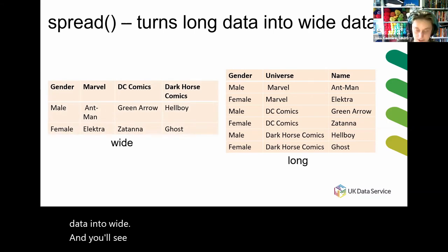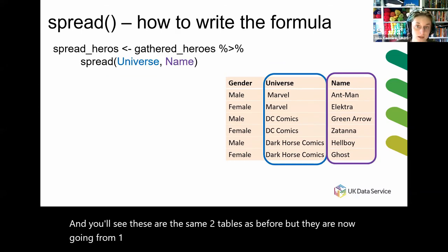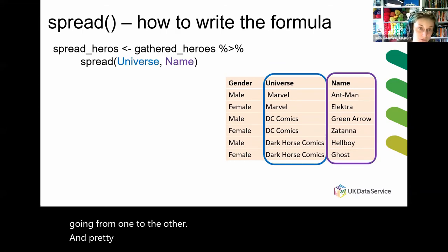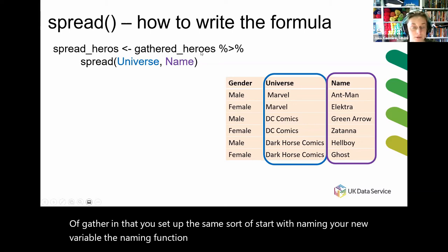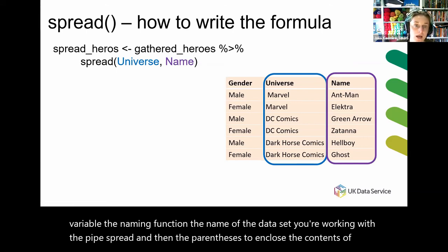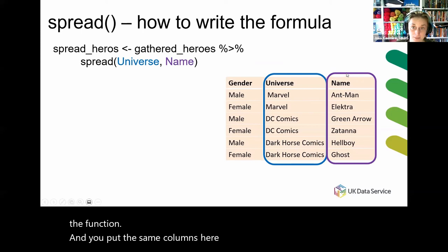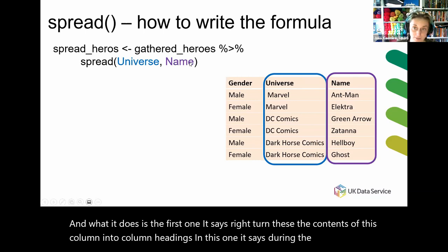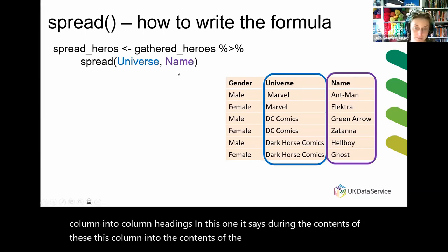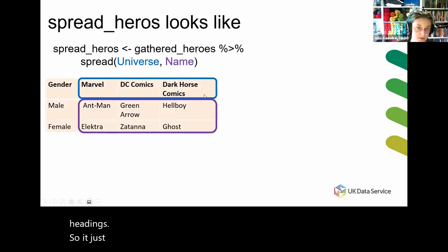You'll see these are the same two tables as before, but now going from one to the other. It's pretty much the reverse of gather — you set up the same sort of start: naming your new variable, the naming function, the name of the data set, the pipe, spread, and then parentheses enclosing the function contents. You put the same columns — 'universe' and 'name'. What it does is: the first one turns the contents of that column into column headings, and the second turns the contents of this column into the contents of the newly created column headings. It does the exact opposite of what gather did.